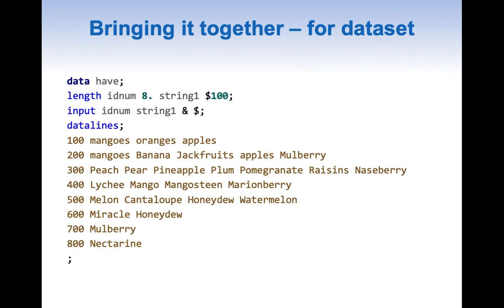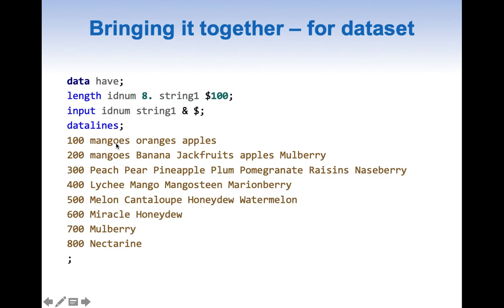Let us bring our knowledge together for a practical dataset. The dataset has two variables: idnum, which is not of much interest, and string1. The string1 variable has multiple words — in our case they are fruits. We want to break each word into a separate variable: fruit1 for mangoes, fruit2 for oranges, fruit3 for apples, and so on.